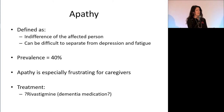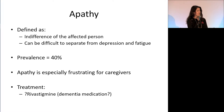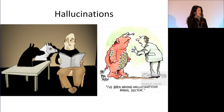Apathy is a tricky one — defined as indifference, a lack of interest or motivation to do anything. It can be difficult to separate from depression or fatigue. Its prevalence is about 40% of people with Parkinson's. Often the patient themselves doesn't complain — they feel fine — but their caregiver is highly frustrated because the person has lost interest in everything. There hasn't been much research on treating apathy; one study suggests rivastigmine — a medication used for dementia — may be helpful, but the jury is still out.